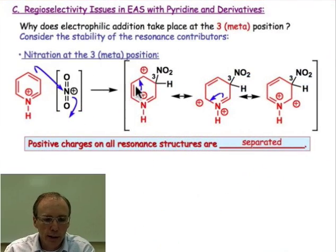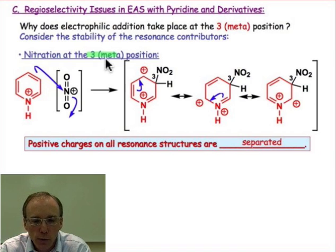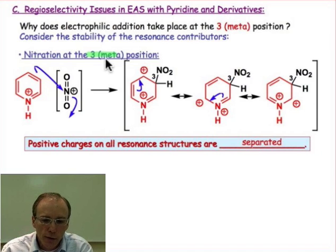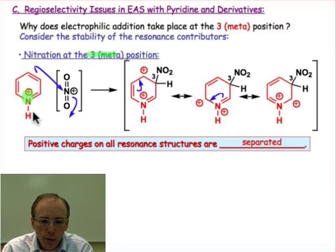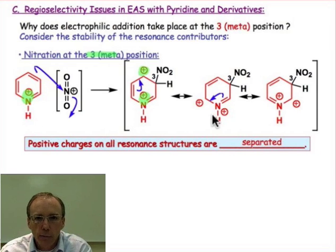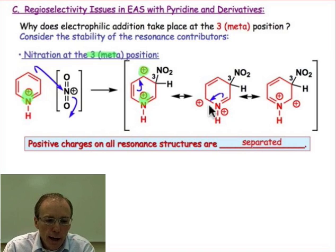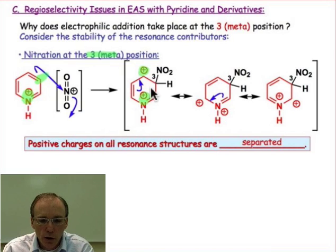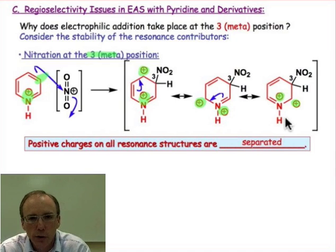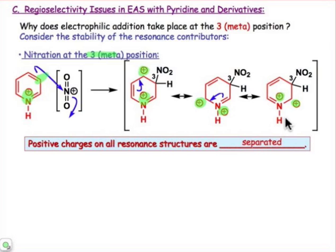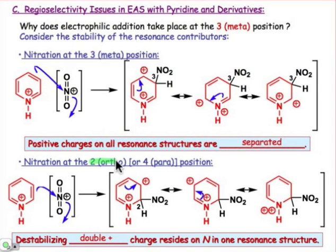With those two modes of reactivity in mind, why does nitration take place at the 3-position? We can draw resonance structures. Considering attack at the 3-position — starting with the pyridinium cation, already protonated — a dication forms as the intermediate. Looking at the different resonance contributors, we find that the positive charge is always separated; it's never on the same atom. No matter what resonance contributor we draw, we have a pair of positive charges, but they're always on different atoms.